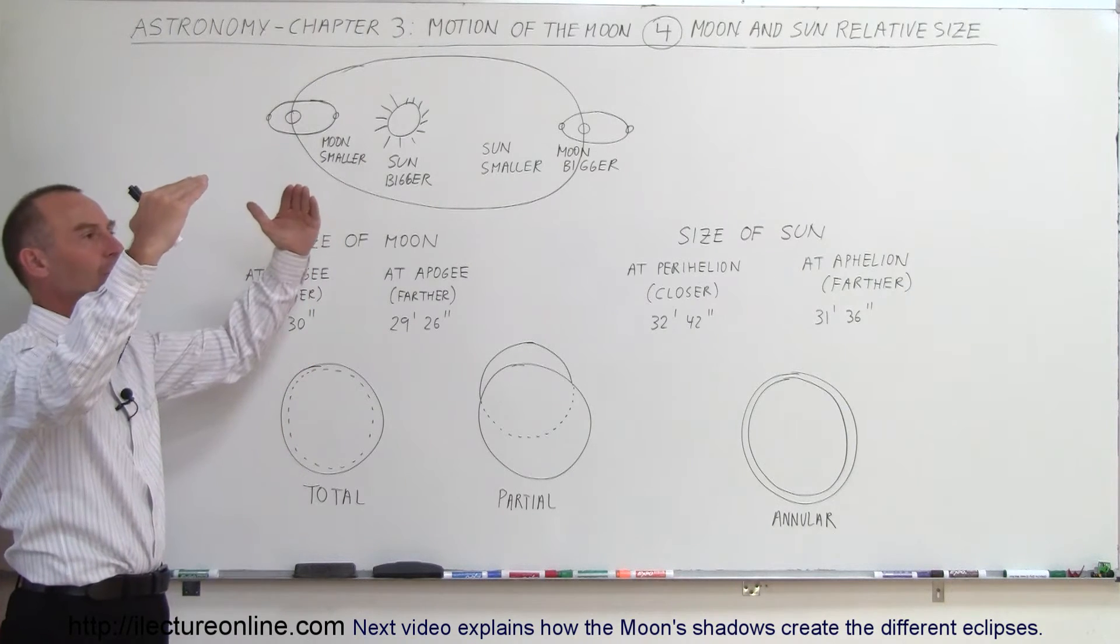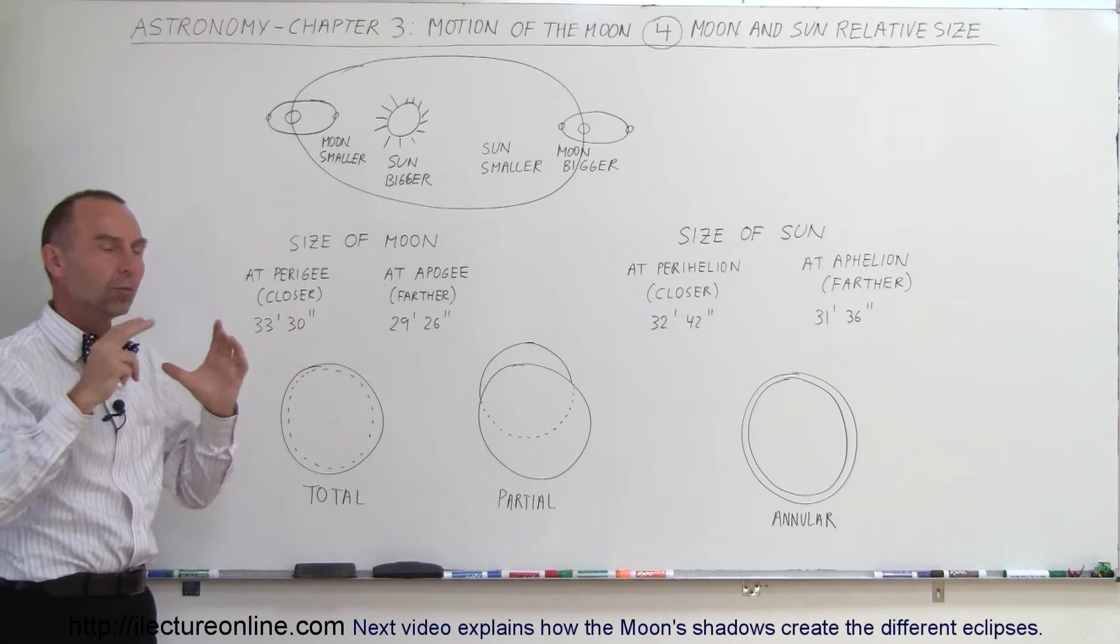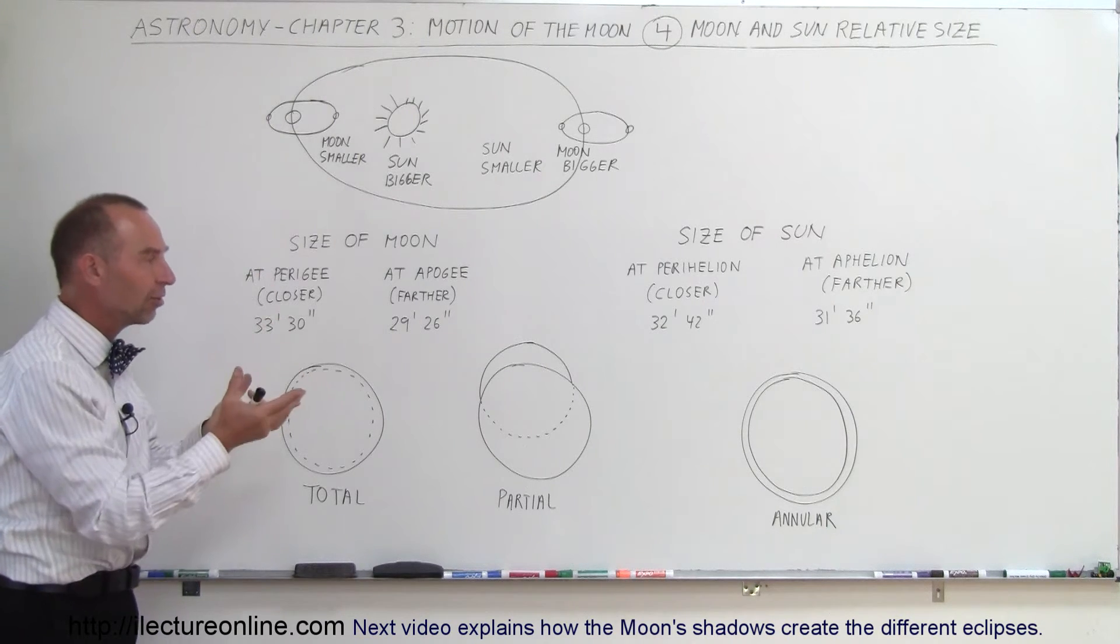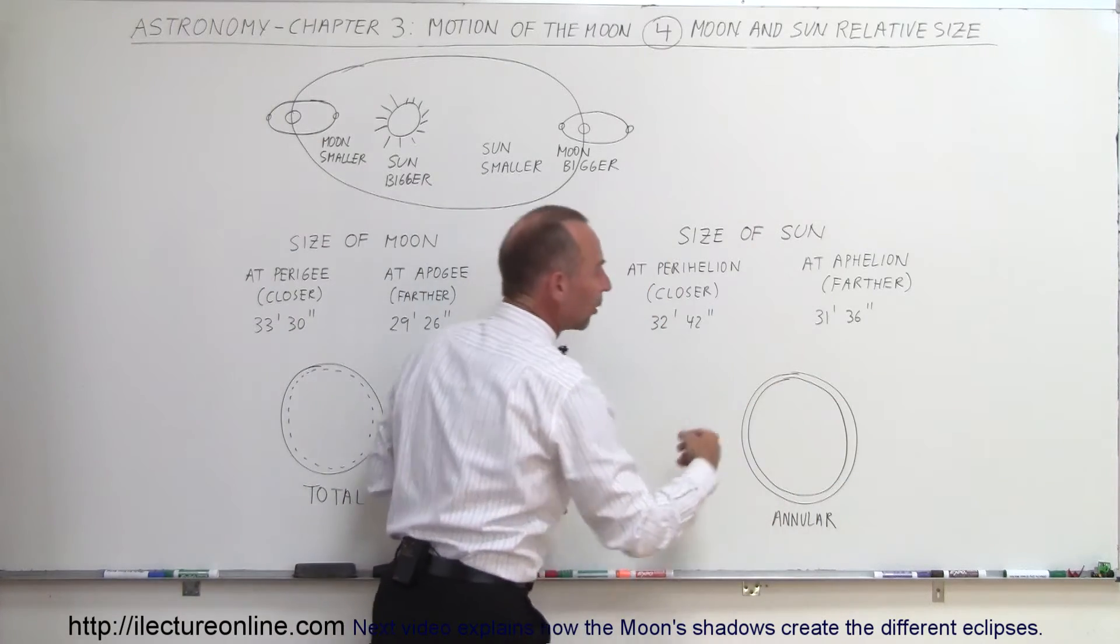then a bigger solar disk with a smaller lunar disk, the Moon's disk will not be able to cover the Sun's disk and so you'll end up with what we call an annular ring solar eclipse.